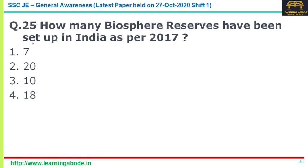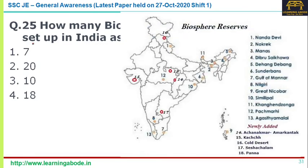Question number twenty-five: how many biosphere reserves have been set up in India as per 2017? The Indian government set up biosphere reserves to protect not only the flora and fauna of protected regions but also the human communities who inhabit them and their way of life. They preserve natural habitat alongside national parks and animal sanctuaries, while also permitting some economic uses. As of today there are 18 biosphere reserves. Answer is option four — 18.